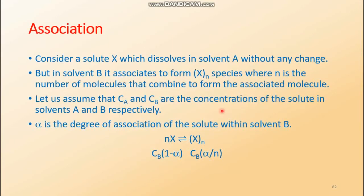Now let us consider the association case. Consider a solute X that dissolves in solvent A without any change, but in solvent B association takes place. For example, acetic acid always forms a dimer: (CH3COOH)2. So the associated species is Xn, where n is the number of molecules that combine — in this example n is typically 2, as forming trimers or higher is less probable. Let CA and CB be the overall concentrations of the solute in solvents A and B respectively.